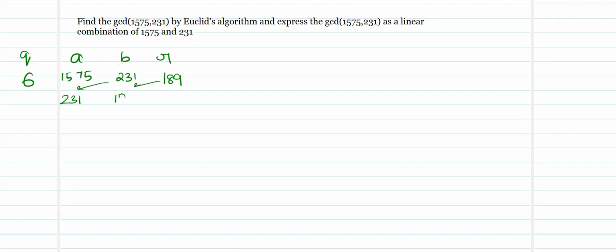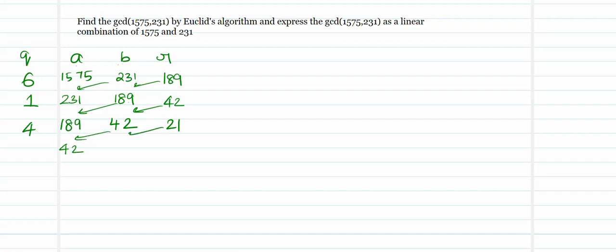So 231 enters as A and 189 enters as B. Divide 231 by 189 — it goes one time and leaves a remainder of 42. This being non-zero, again repeat the algorithm. 189 is now divided by 42; it goes four times and leaves a remainder of 21. Repeat the next step: 42 enters as A and 21 enters as B. Divide 42 by 21 — it goes two times exactly and leaves no remainder. We have reached the end of the algorithm. Since we have a zero remainder, the value in the B position, 21, is the GCD of the two elements.